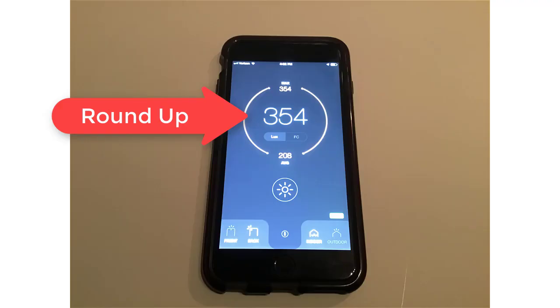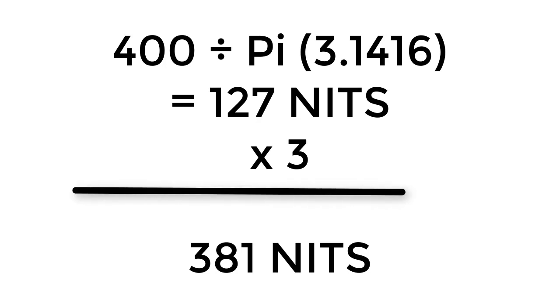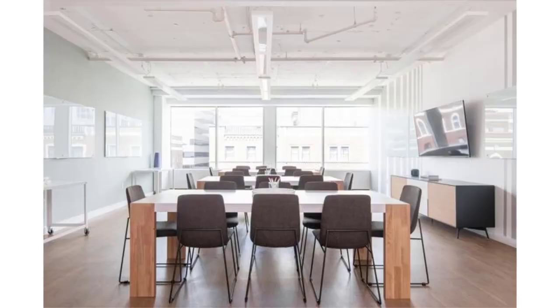Let's do an exercise to show you how this is done for an LCD display. I've placed my bright white cardstock on the table. My reflected light measurement is 400 lux. So I'll divide 400 by pi, or 3.1416, which gives me 127 nits. Then I multiply this number by 3 to get 381 nits. What this tells me is that I need a display that is around 381 nits. This should help you better understand how to determine the proper display brightness for any space.